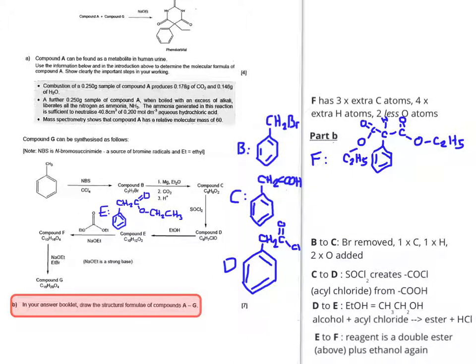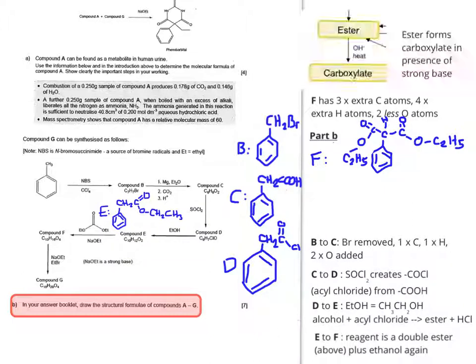Going from compound F to compound G we have to look again at the organic reactions map. In the corner of it it shows what happens when an ester is subjected to heat and a strong base. The ester changes in some way.